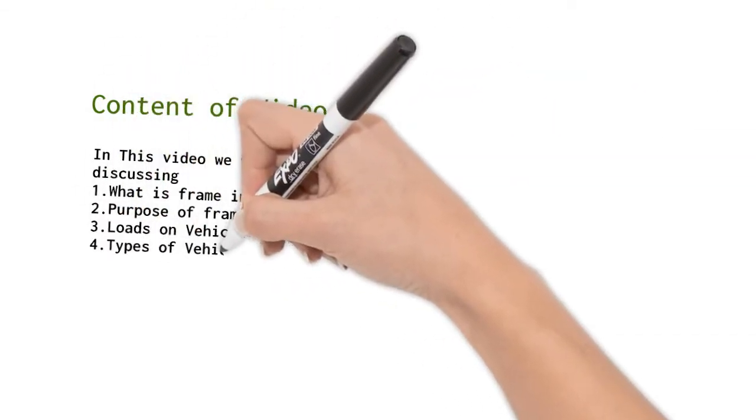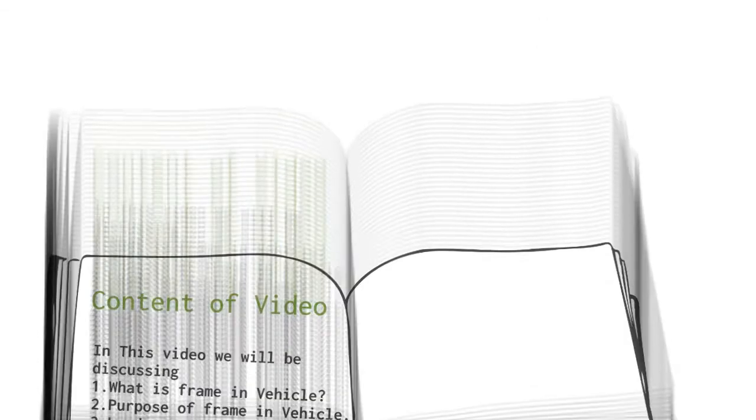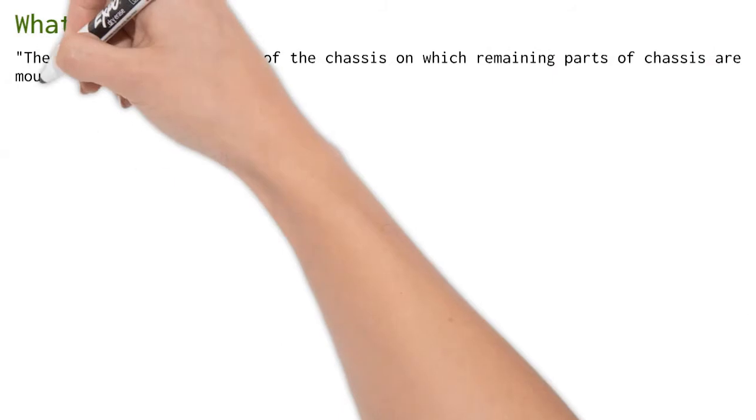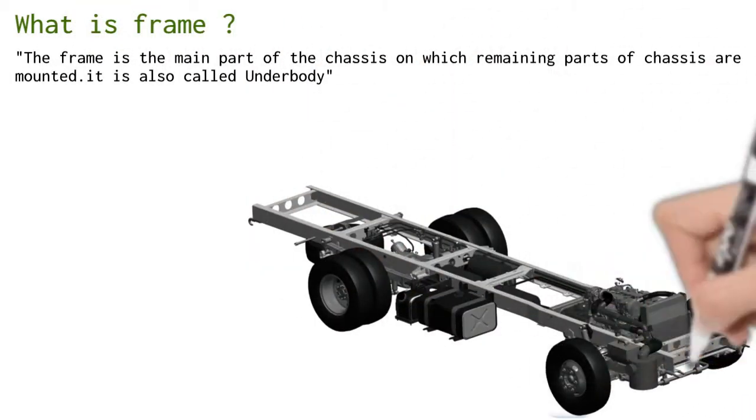Let us understand what is frame in automobile or in vehicle. The frame is the main part of chassis on which remaining parts of chassis are mounted. It is also called underbody at some places. The frame is supported on the wheels and tire assemblies.